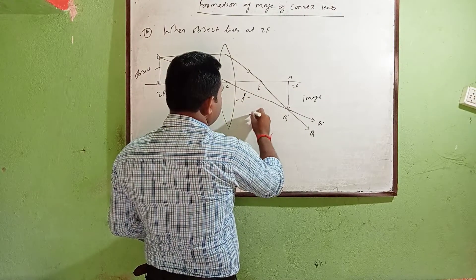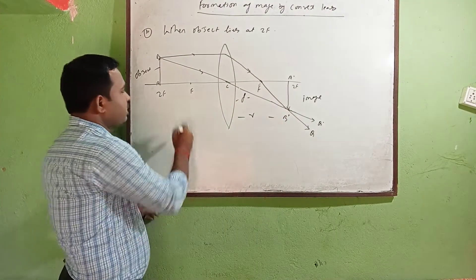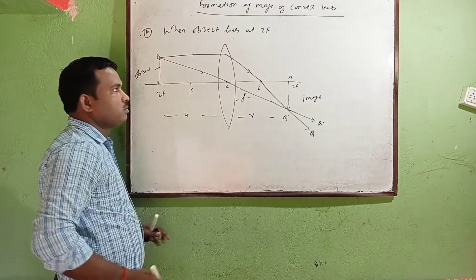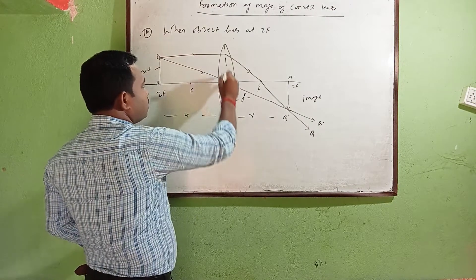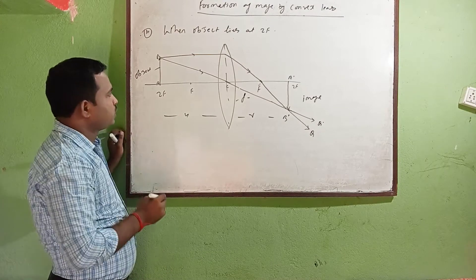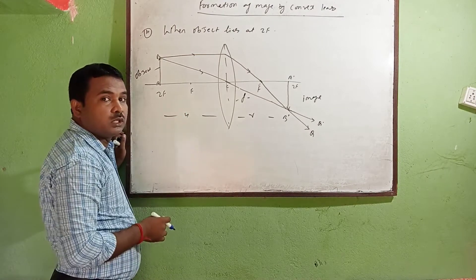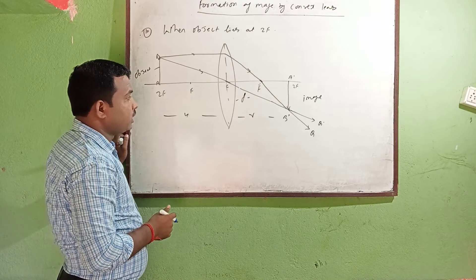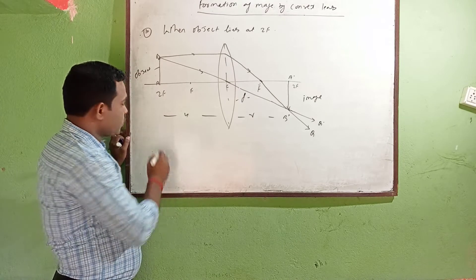This is the image A'B'. This is the focal length. Image distance is denoted by v and u is the object distance. Now you can find out the relation of v.